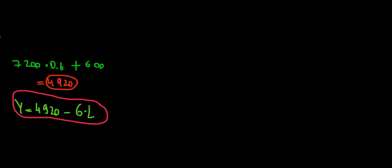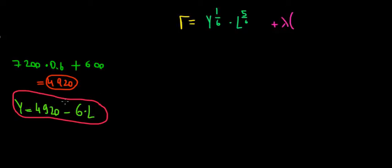Our Lagrangian will look as follows: we want to maximize the utility function, which is equal to y to the power of 1/6 times l to the power of 5/6, plus lambda multiplied by the budget constraint, which is going to be 4920 minus 6l minus y.